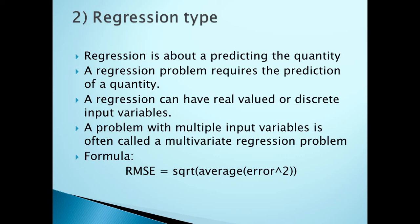Another example is an insurance dataset, where you need to determine how much money should be kept in reserve for claims. After applying your model you get a value representing how much money needs to be reserved. Because you are predicting an actual quantity, this is also a regression type of problem.